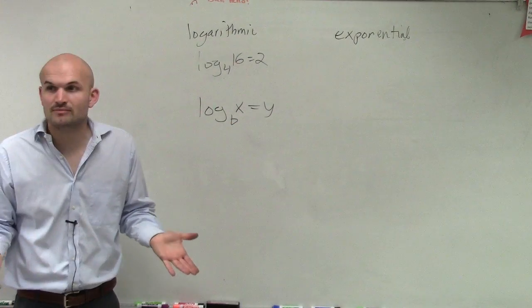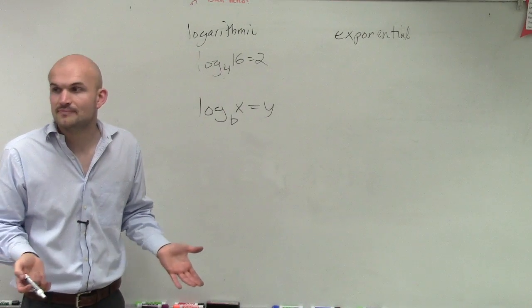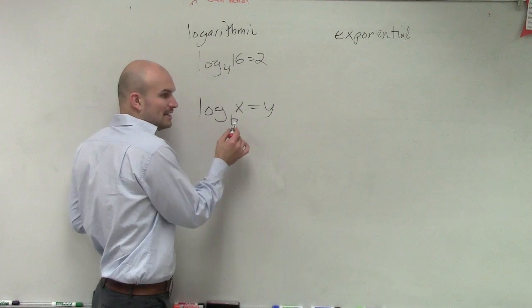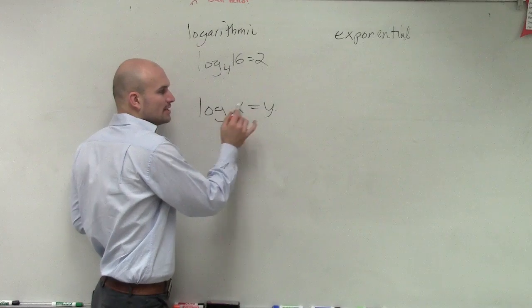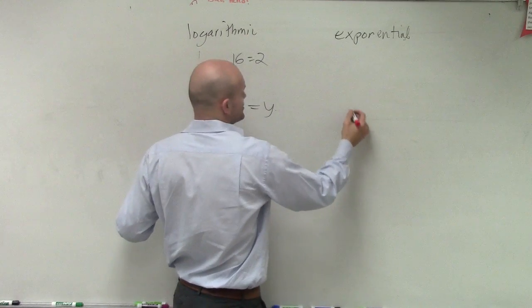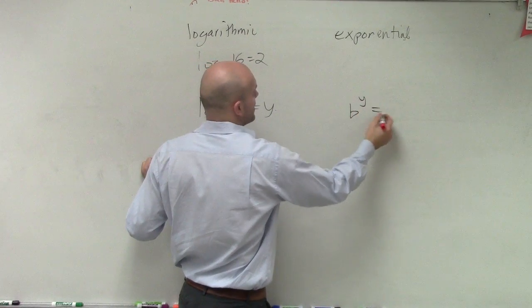Remember when we did the inverse? We said b raised to what power gives us x? So the exponential form is b raised to what power gives us x.